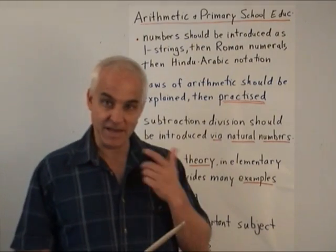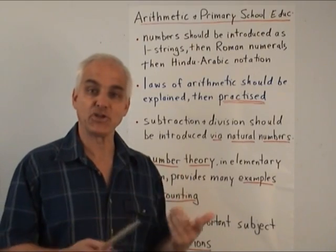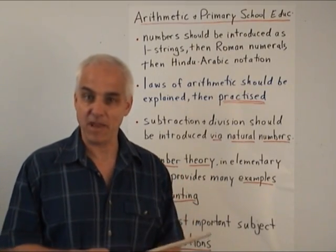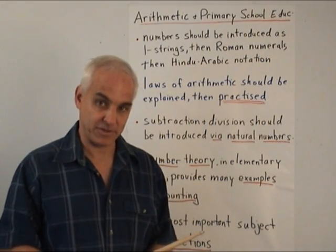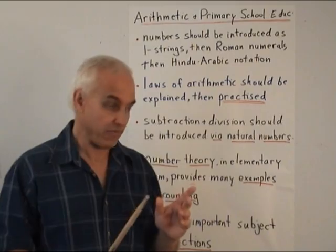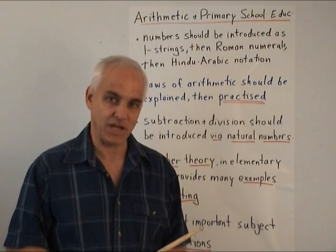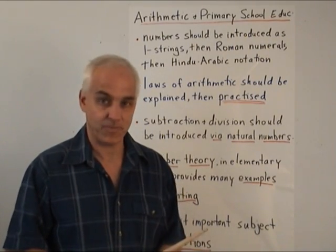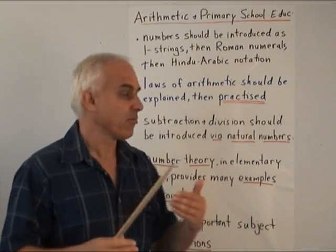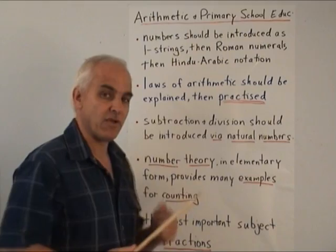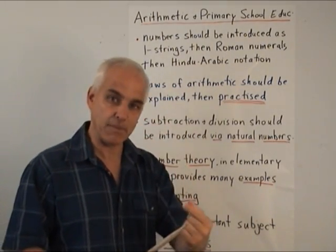First of all, numbers should be introduced as one-strings — as strings of ones. This is the natural and historical way of thinking about numbers. Then, after that, one should go to the Roman numeral way of thinking about numbers, not for very long, but just to introduce it. And then, after that, the Hindu-Arabic notational system, which we all use. There should be this progression in complexity, and students should really realize that a number as a string of ones is the fundamental concept — the Hindu-Arabic notation just gives us names for those numbers.